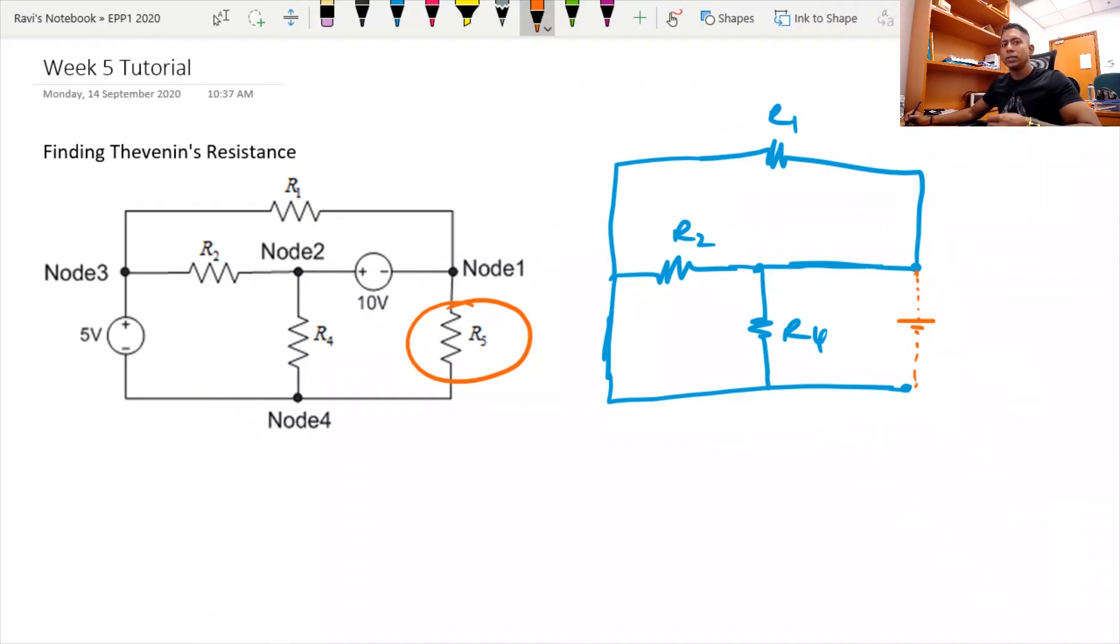examine how the current will flow. Okay, so first step is you can see that this point here and this point is actually a short circuit. That means I can actually redraw this in